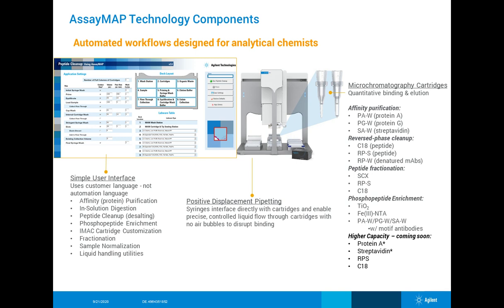We can do fractionation with our strong cation exchange as well as different reverse phase cartridges, and phosphopeptide enrichment with titanium dioxide as well as iron NTA. The iron NTA cartridge is an IMAC cartridge, so you're able to cleave off that iron heavy metal and replace it with a different heavy metal if needed, to look at different tagged types of proteins and peptides. We can also use motif antibodies using protein A, protein G, or streptavidin for specific phosphopeptide targets such as phosphoserine-143.